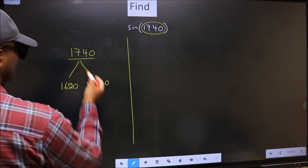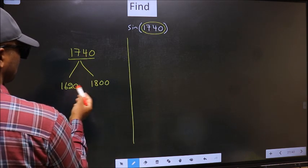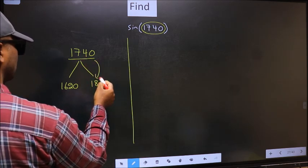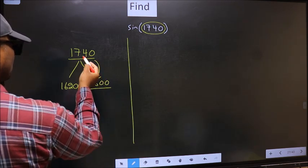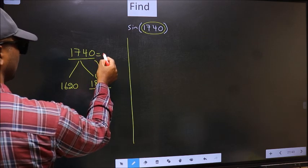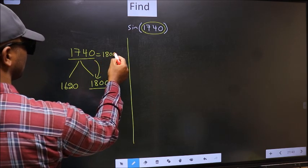Next. Now this number is close to which number? This is close to 1800. So this now should be written as 1800 minus 60.